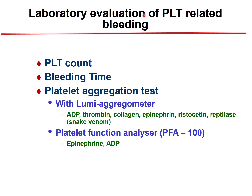For laboratory evaluation of platelet-related bleeding, we measure platelet count, bleeding time, and platelet aggregation. Aggregation tests can be performed using a Lumi aggregometer with different substances such as ADP, thrombin, collagen, epinephrine, ristocetin, and others that activate platelets through different systems. Platelet-enriched plasma is collected, or we can use the PFA (Platelet Function Analyzer) with epinephrine/ADP-containing disks.